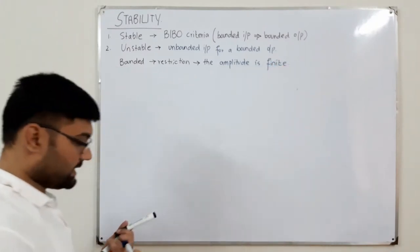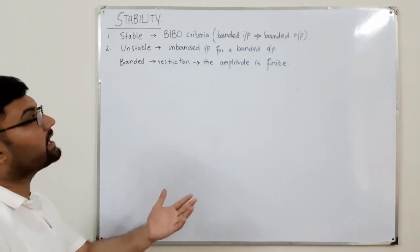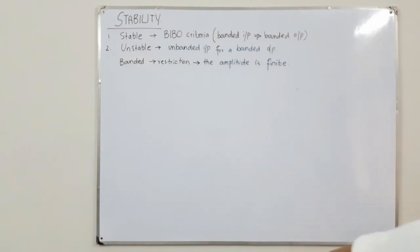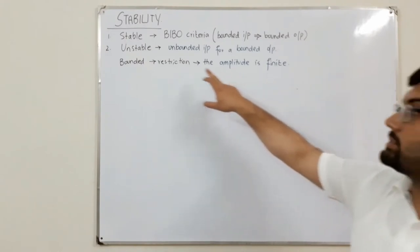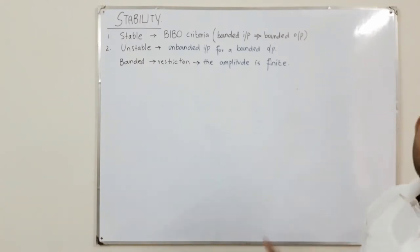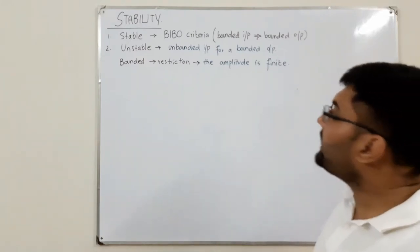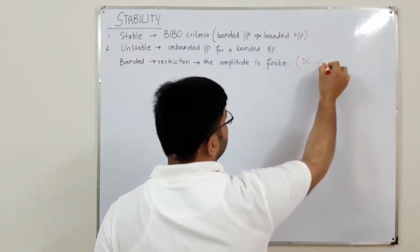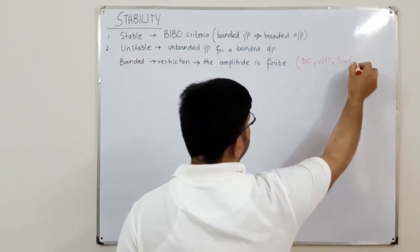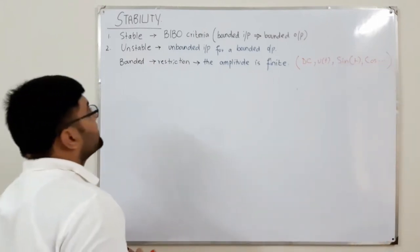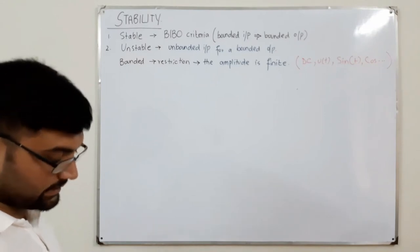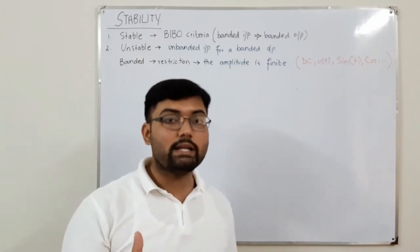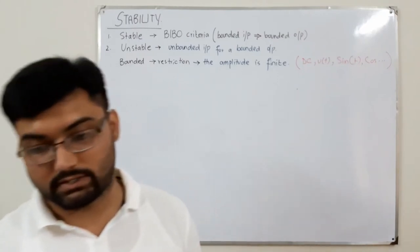The amplitude of the signal is finite. So if you provide a signal whose amplitude is finite to a system and it gives you another signal at the output whose amplitude is again finite, this means that this system is a stable system. Whereas if you give a finite amplitude signal to a system whose output is an infinite signal, that is an unstable system. Examples of signals with finite amplitude include a DC signal, unit step signal, sine function, cosine function, etc.